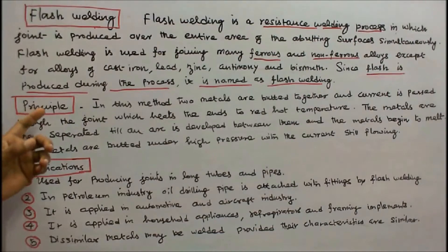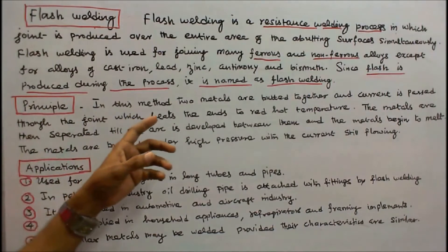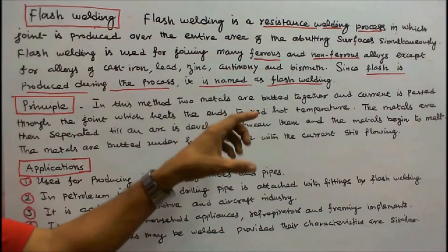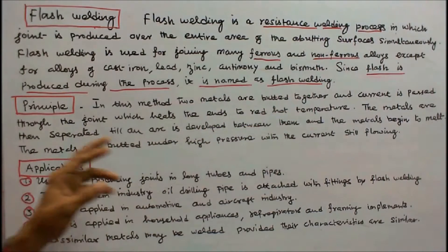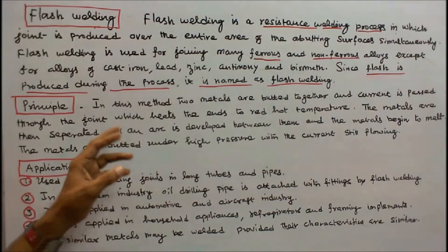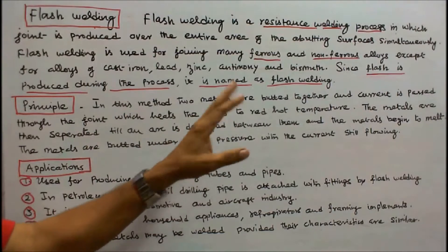Principle of Flash Welding: In this method two metals are butted together and current is passed through the joint which heats the ends to red hot temperature.